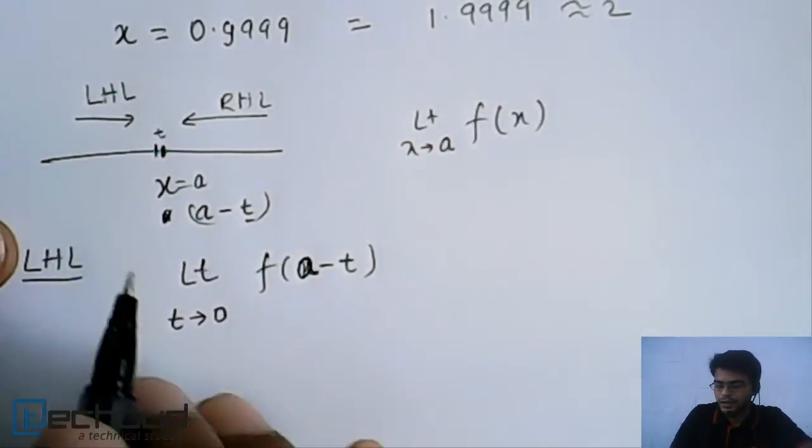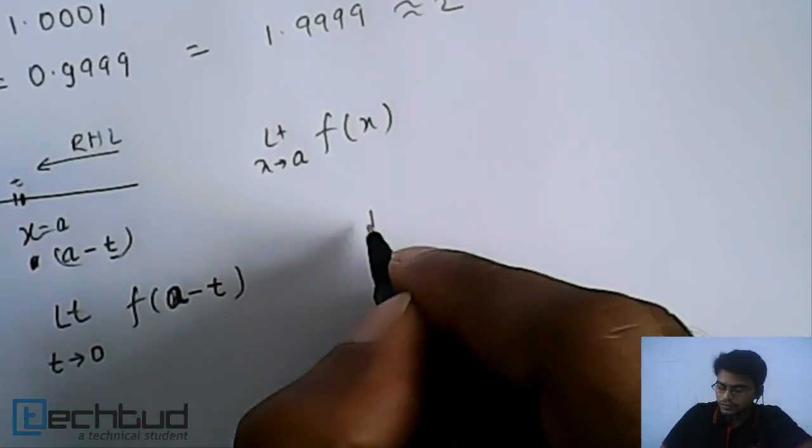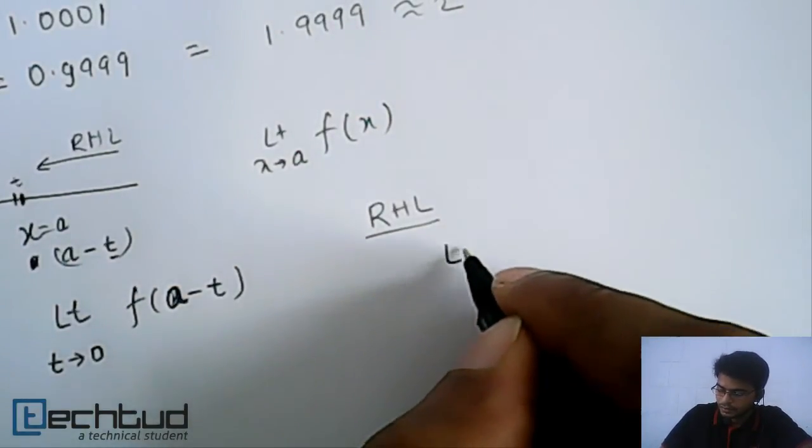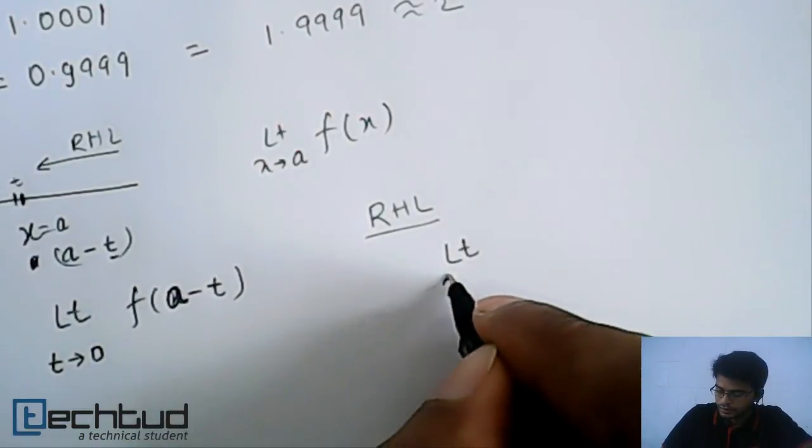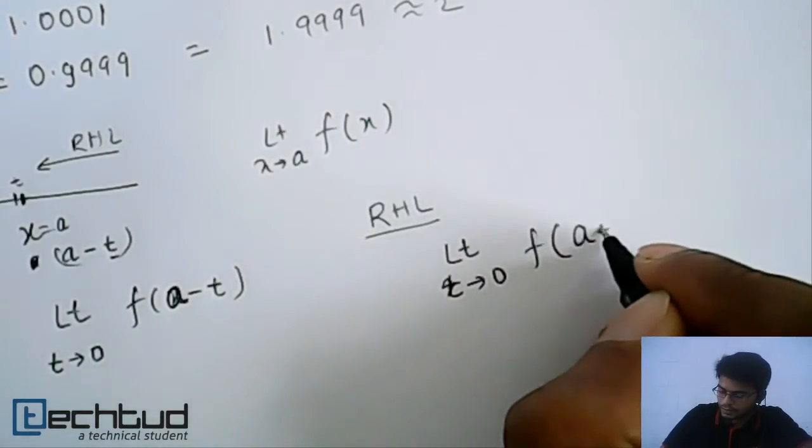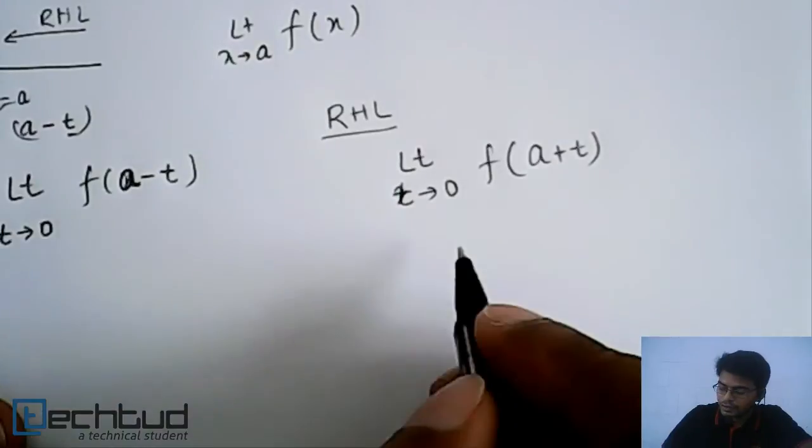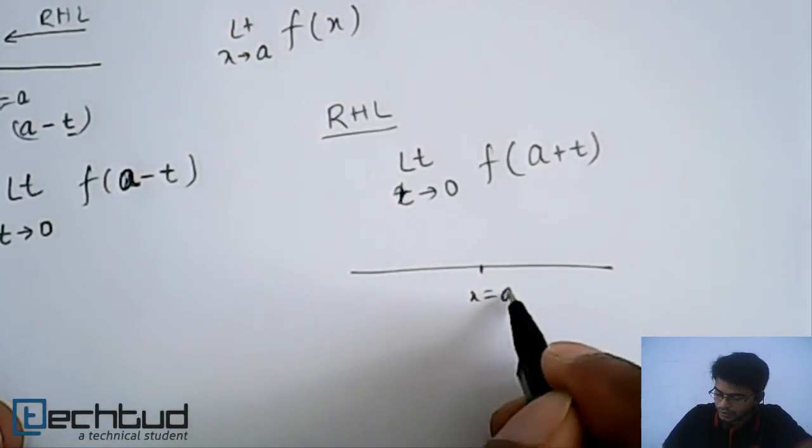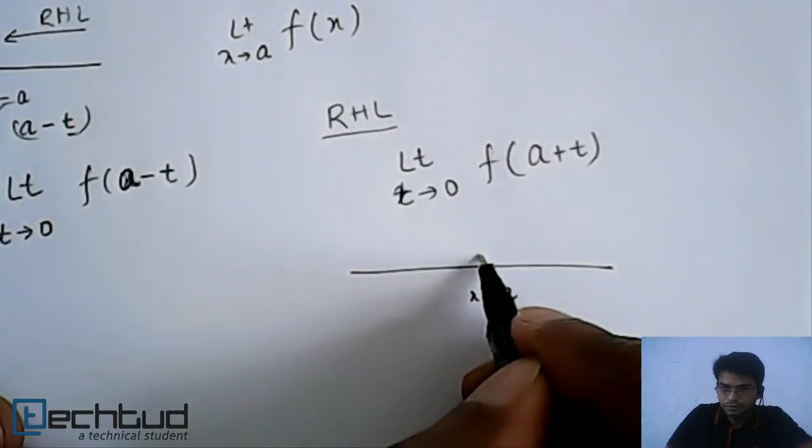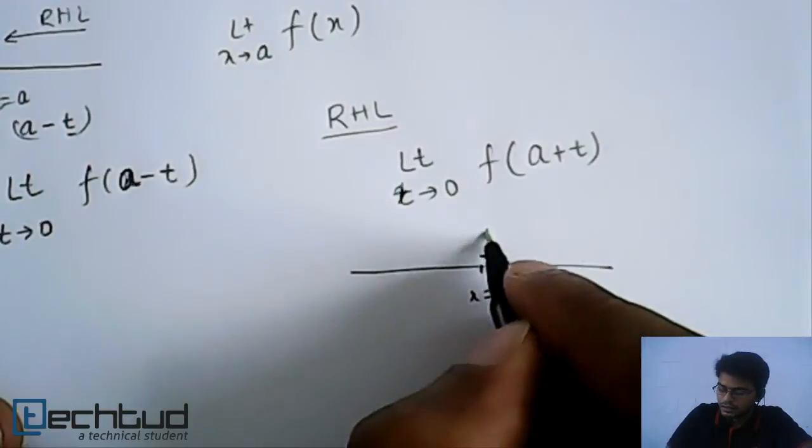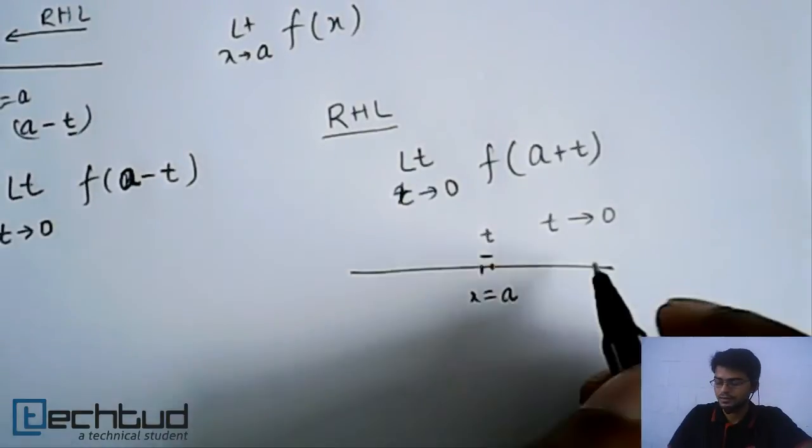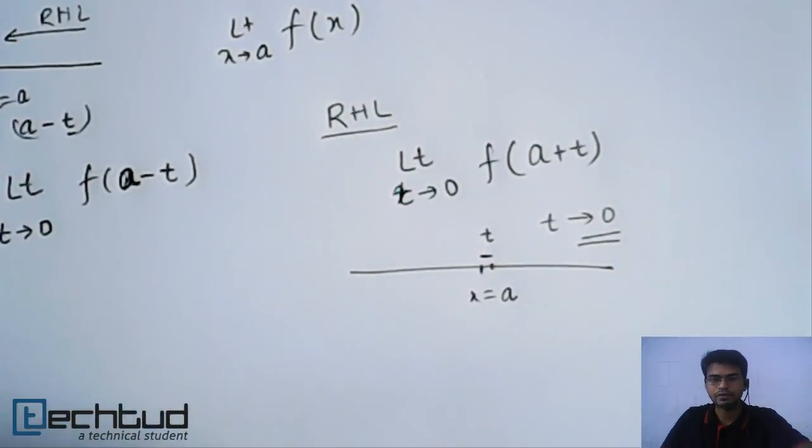Similarly, in RHL, what do we do? Right hand limit. In right hand limit, limit t tends to 0, f(x) at a plus t. So if you consider what we are doing on this x equal to a, we are taking a point very close to this x equal to a, and this difference is t, where t tends to 0. So as small as you can imagine. So this is the concept of right hand limit.